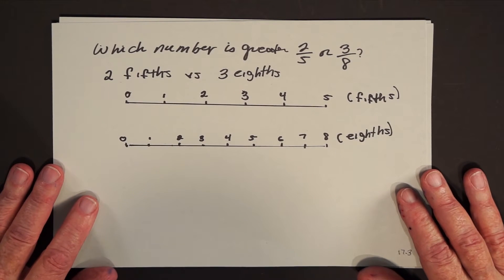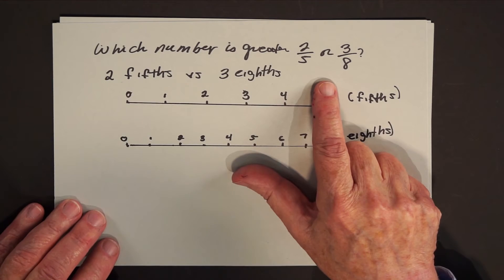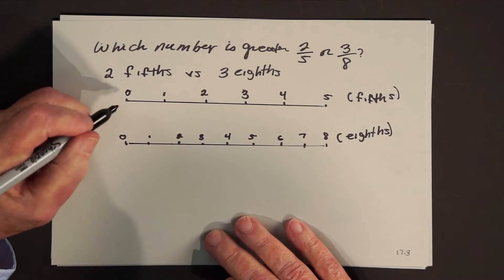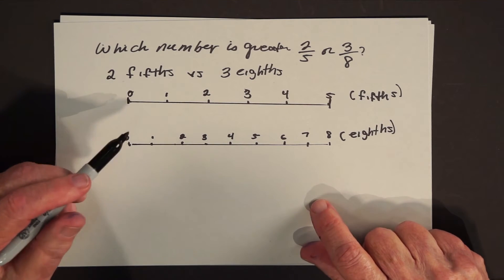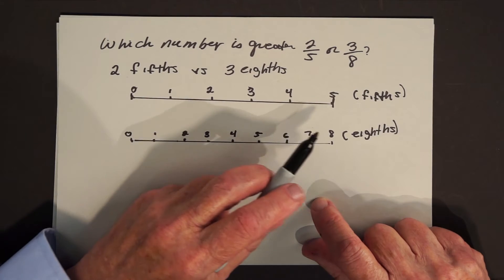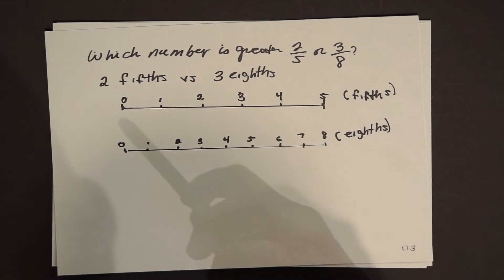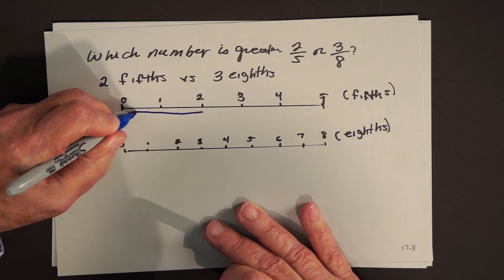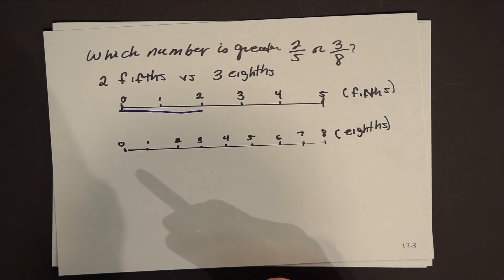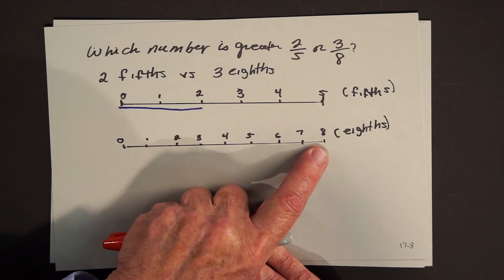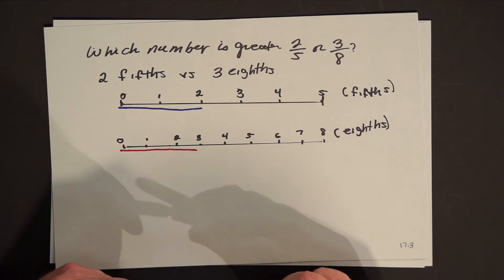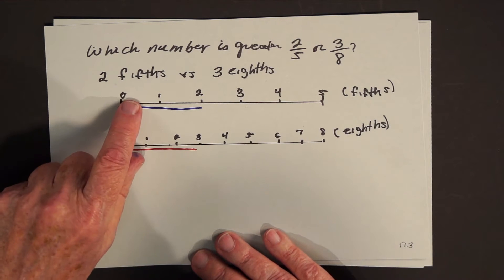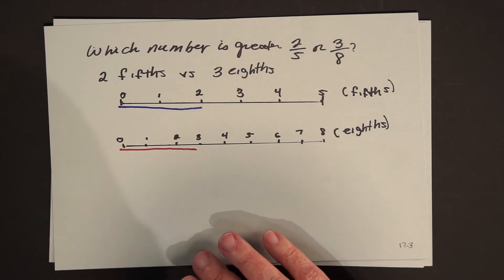That's what I want to discuss in today's session. For example, which number is greater: 2 fifths or 3 eighths? If you use the number line — this is one unit — in fifths, you break it into 5 pieces of equal size. For 3 eighths, you divide that same length into 8 equal pieces. Even though you're taking three of them, we don't know for sure whether those three pieces add up to more than the two pieces. So we had to find a common denomination.